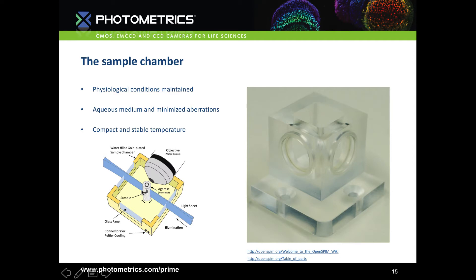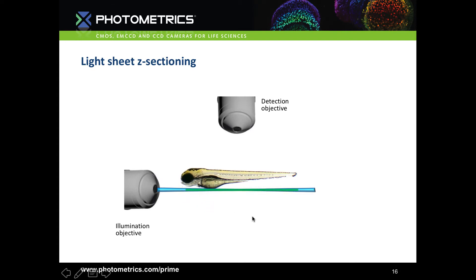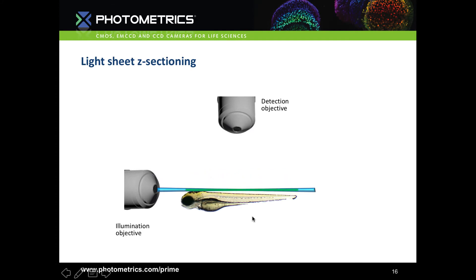The sample can then be moved in XYZ and rotated. To generate Z-stacks, you simply move the sample through the lightsheet beam. You only detect fluorescence from the area illuminated by the lightsheet. By adjusting the width of the beam waist you can get larger or smaller step sizes. Smaller steps give higher resolution but take longer and generate more data; a thicker beam with fewer steps cuts down on time and data when high resolution isn't needed.